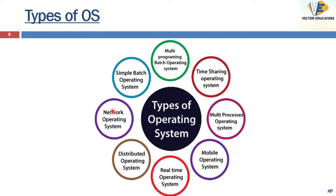Now we come to network operating system. It runs on the server and provides the server the capability to manage data, users, clients, security, applications, and networking. It allows sharing of resources like files and devices among users. Examples include Microsoft Windows Server 2008/2012 and Mac OS X. It enhances security implementations in a network, and upgrades can be centrally managed.